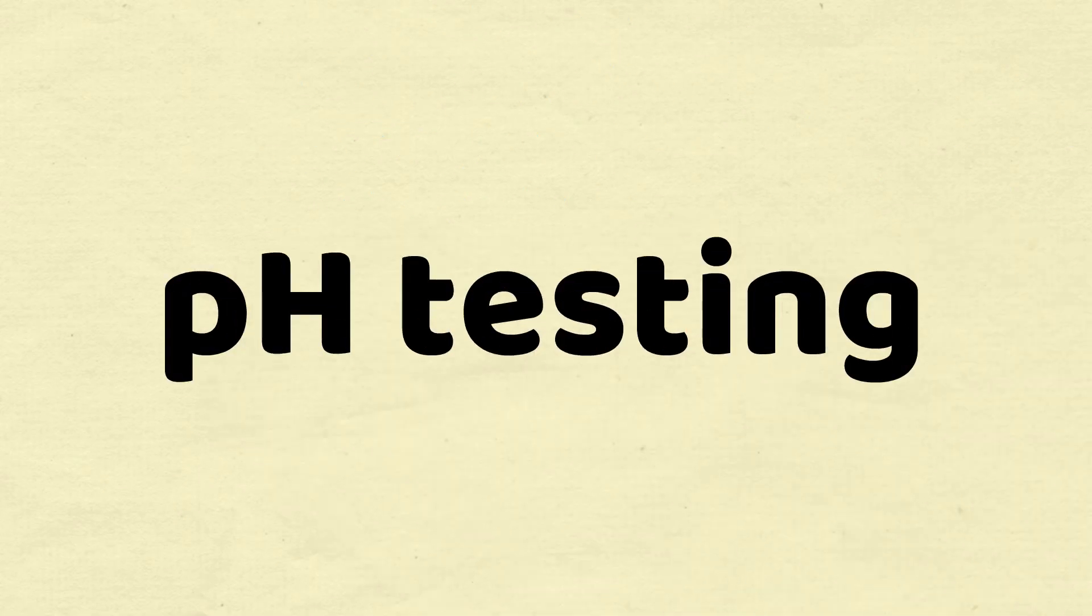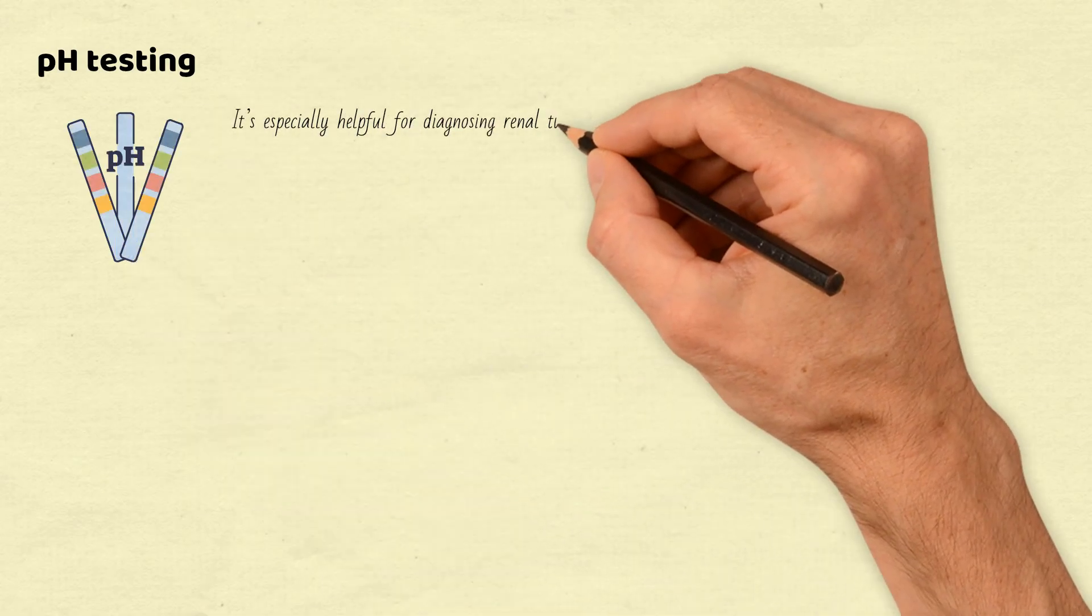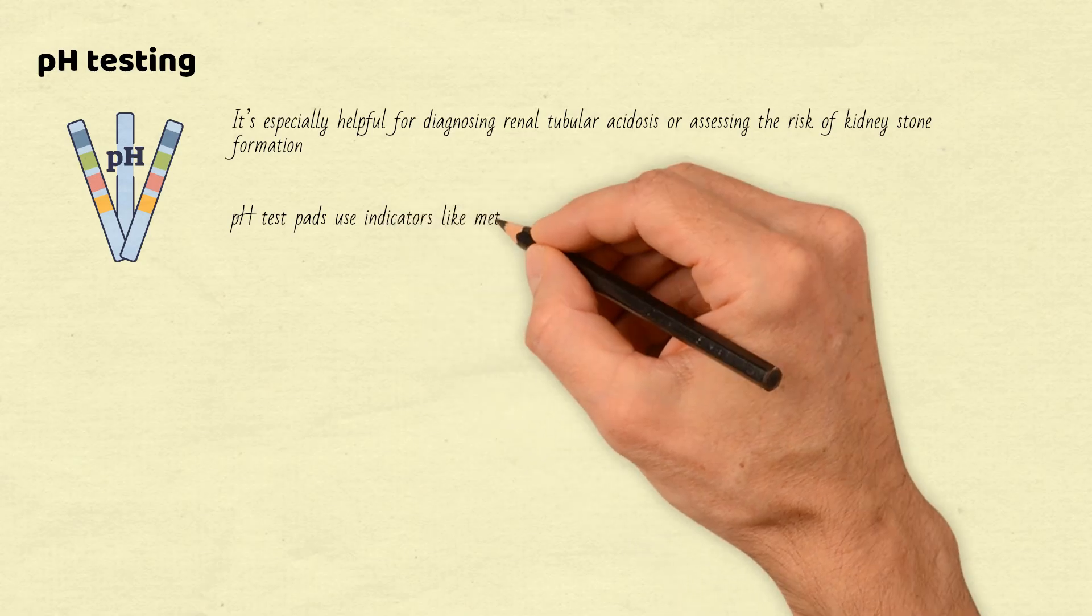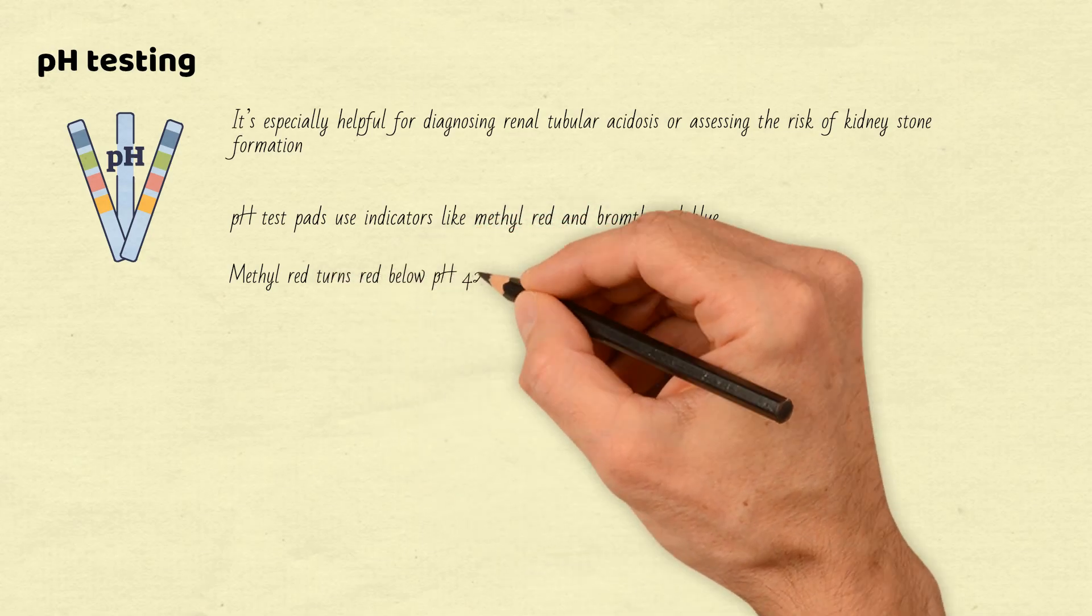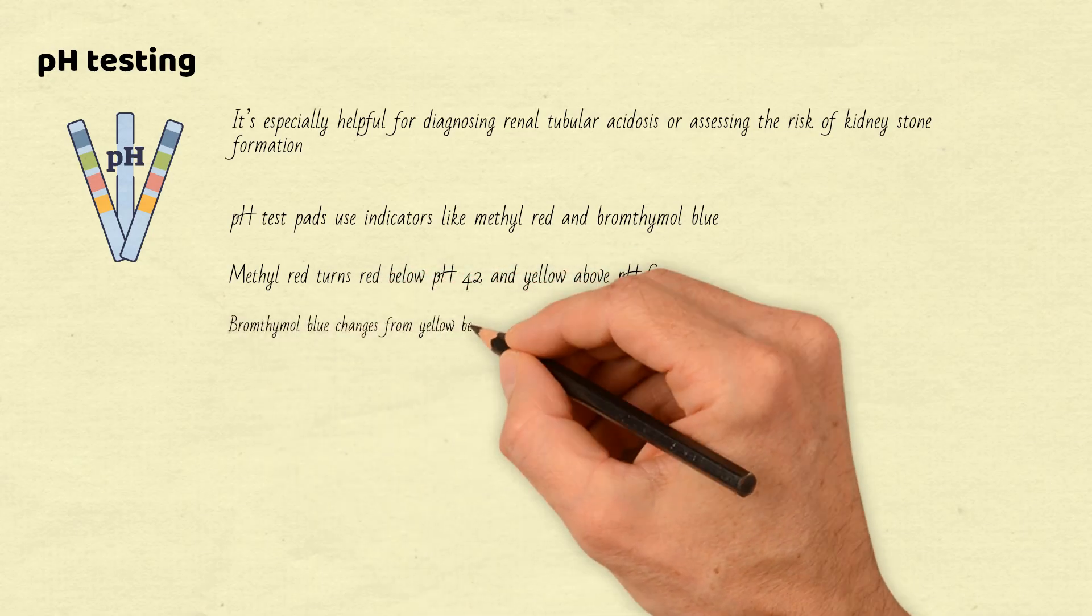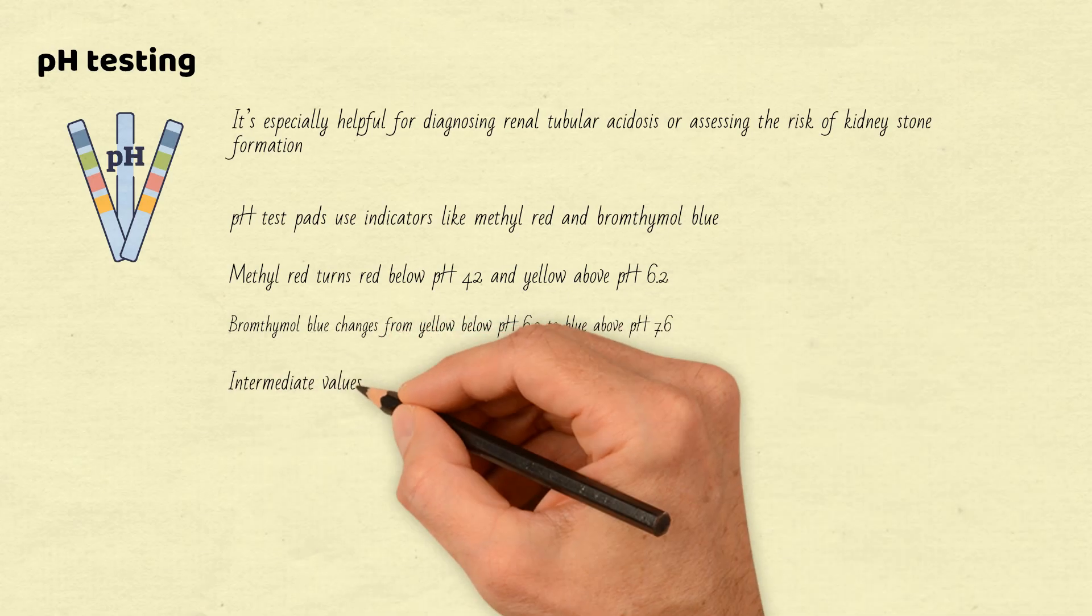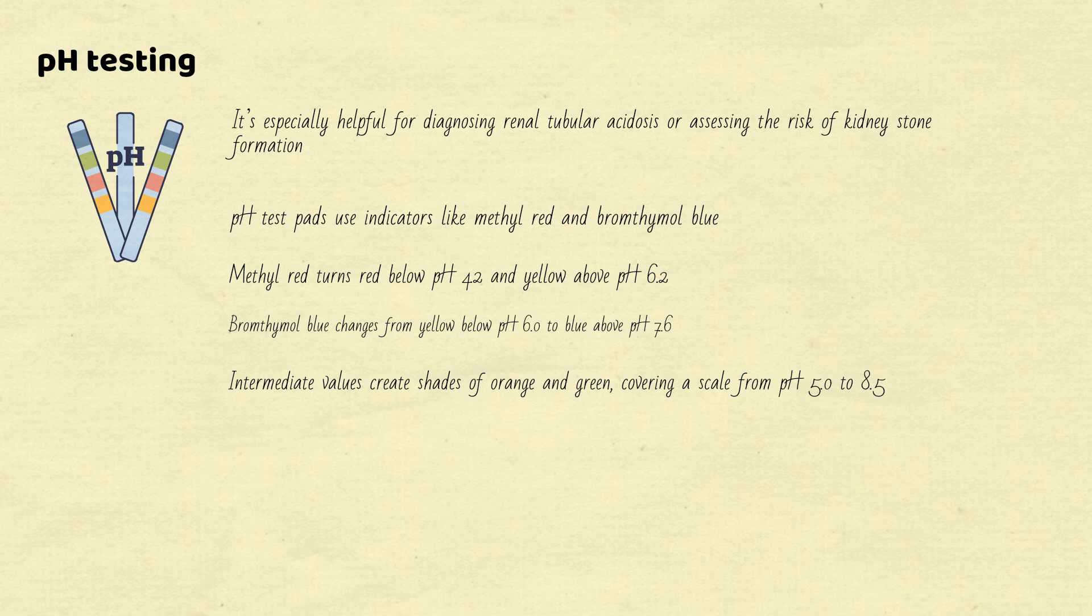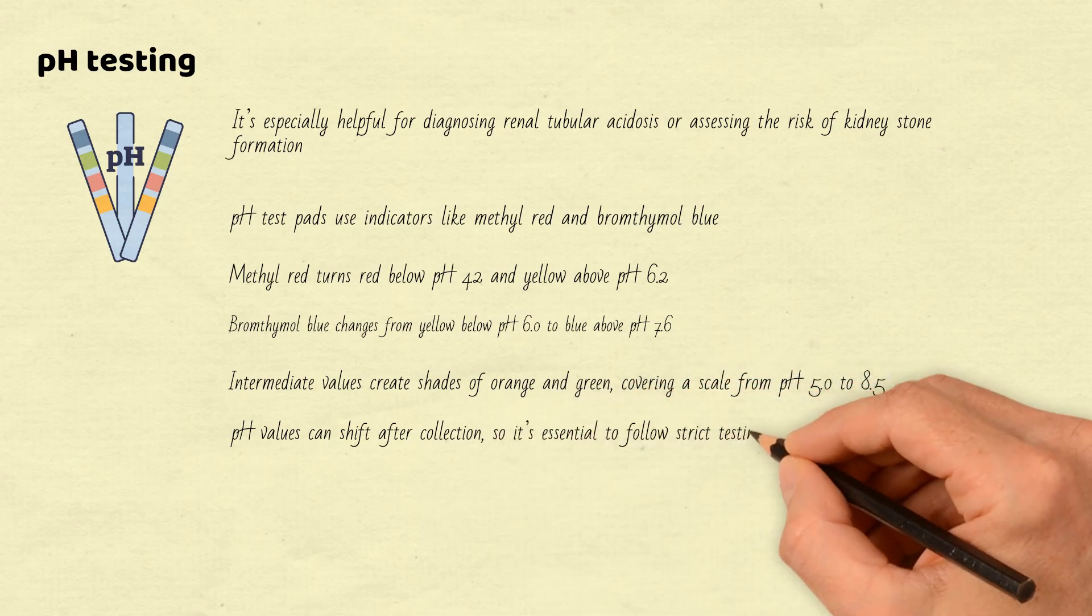Next, let's look at pH testing, which evaluates urine acidity. It's especially helpful for diagnosing renal tubular acidosis or assessing the risk of kidney stone formation. pH test pads use indicators like methyl red and bromthymol blue. Methyl red turns red below pH 4.2 and yellow above pH 6.2. Bromthymol blue changes from yellow below pH 6.0 to blue above pH 7.6. Intermediate values create shades of orange and green, covering a scale from pH 5.0 to 8.5. One key limitation: pH values can shift after collection, so it's essential to follow strict testing procedures for accurate results.